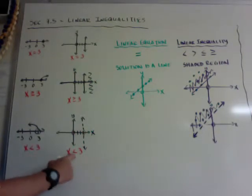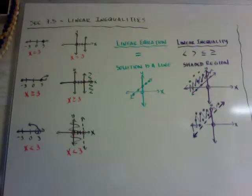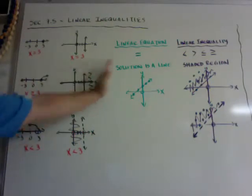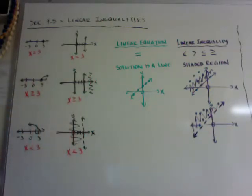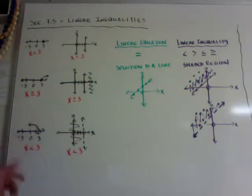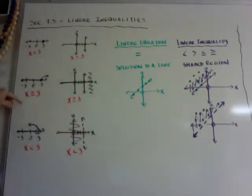Less than means I'm going to shade to the left. If you look at the book, they take their pencil and shade the whole thing. I'm okay with you just putting squiggly lines, as long as I can clearly see it's to the right or clearly to the left. Greater than goes to the right, less than goes to the left, just like on a number line.